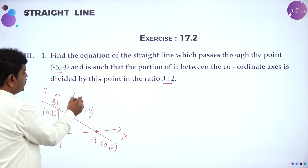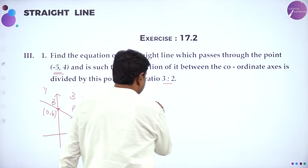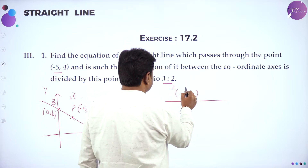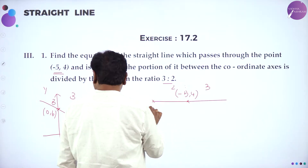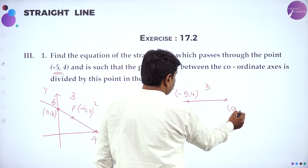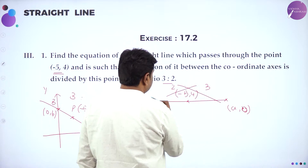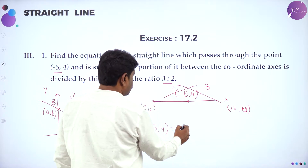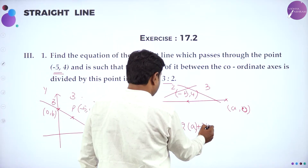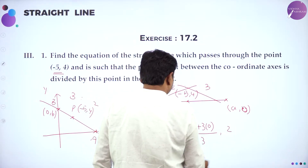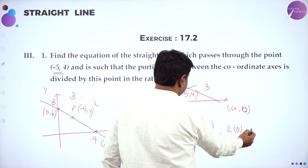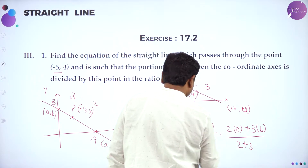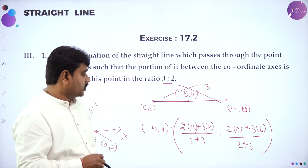They gave the ratio as 3 is to 2. If I draw this and say this is the point of division, the point of division is (-5, 4). The ratio given is 2 is to 3, with one point being (0, B) and the other being (A, 0). Using the section formula for internal division: MX2 gives (2 times A plus 3 times 0) divided by (2 plus 3), and MY2 gives (2 times 0 plus 3 times B). Now equate the first value to the first coordinate and the second to the second.